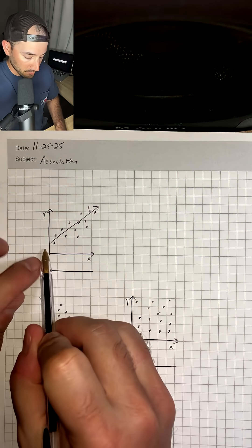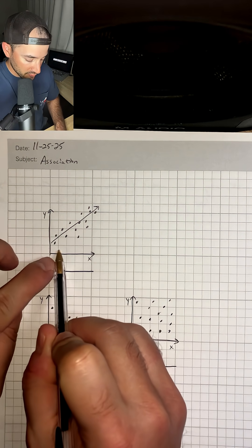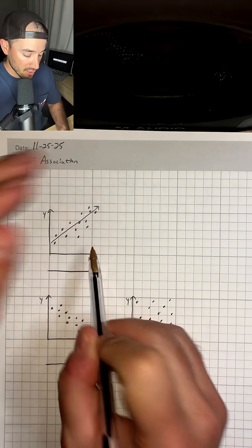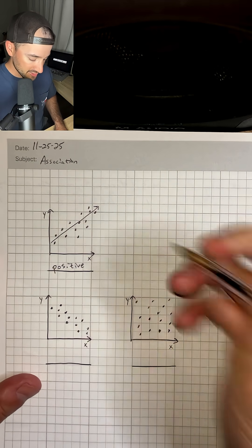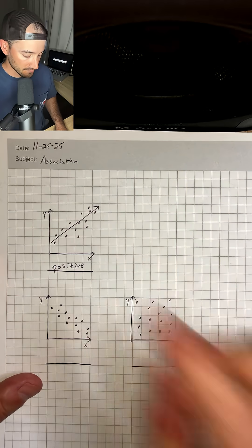So again, we're looking at it from left to right. As we go from left to right, our points are getting higher and higher and so that means that we're going to have a positive association for that scatter plot.